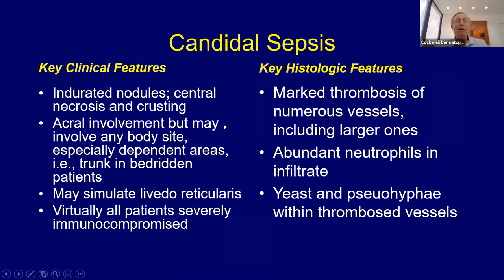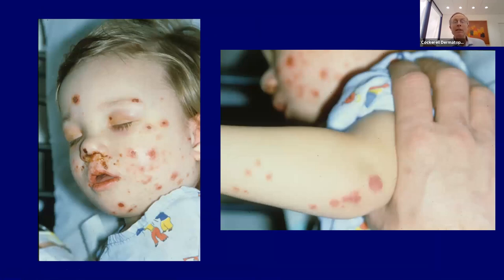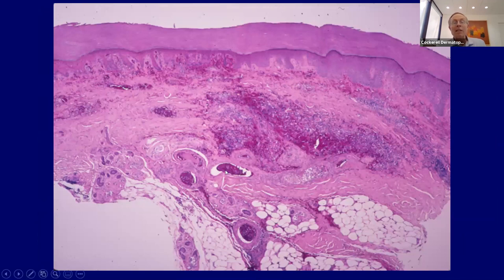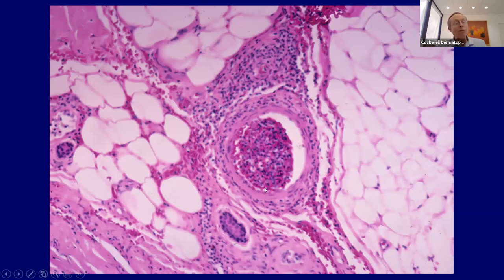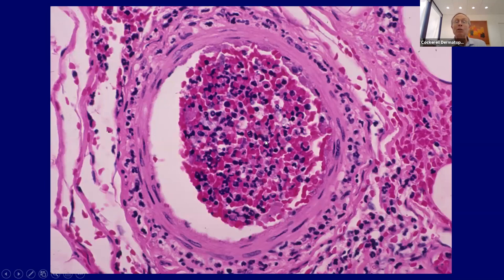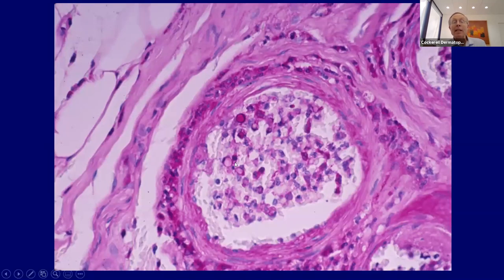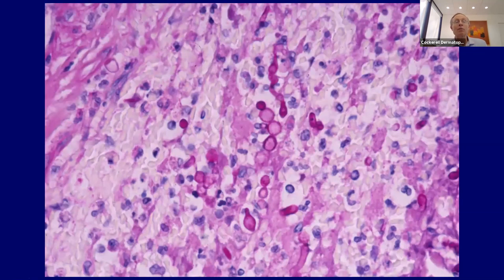Candida sepsis — here you're getting fungemia. Same sort of thing, but instead of bacteria, fungi cause the blood vessel thrombosis. Usually a very bad sign in severely immunocompromised patients, typically leukemic patients who are neutropenic. Here's a child with leukemia on chemotherapy — even the larger blood vessels down in the subcutaneous fat are thrombosed. Notice all the neutrophils are intact with no leukocyte eclasia, inside the vascular thrombosis. The PAS stain highlights all the candida organisms inside this plugged blood vessel. The organisms were also actually in the skin, budding and forming pseudohyphae in the dermis.